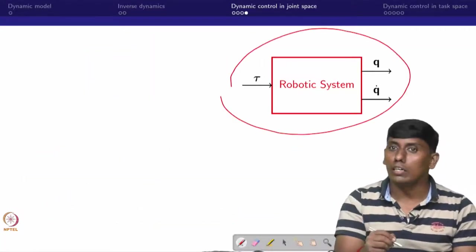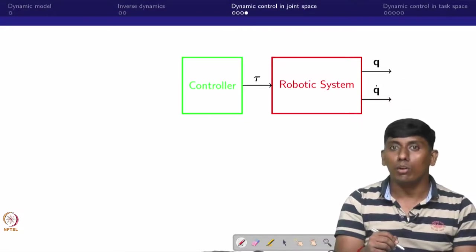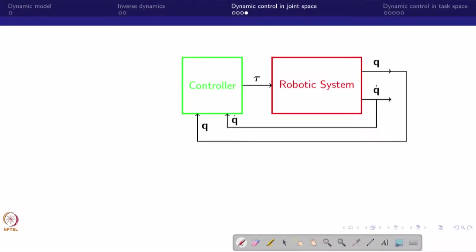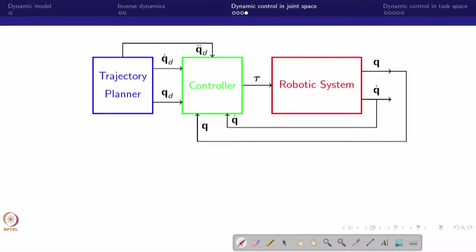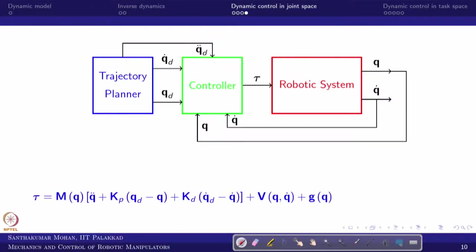How does computed torque control come here? This is the controller. We take feedback and in addition we take Q-double-dot-desired as a feed-forward. In addition, we compensate the dynamic terms. This is the computed torque control, and this is in the joint space. Now we will see the same thing in task space.